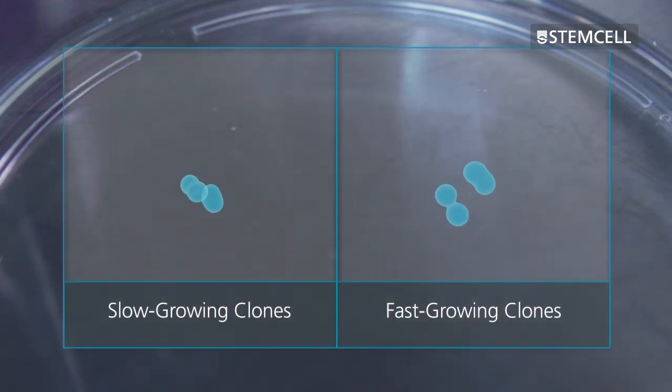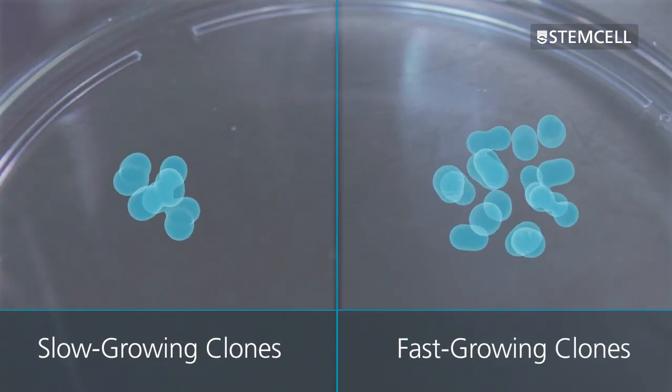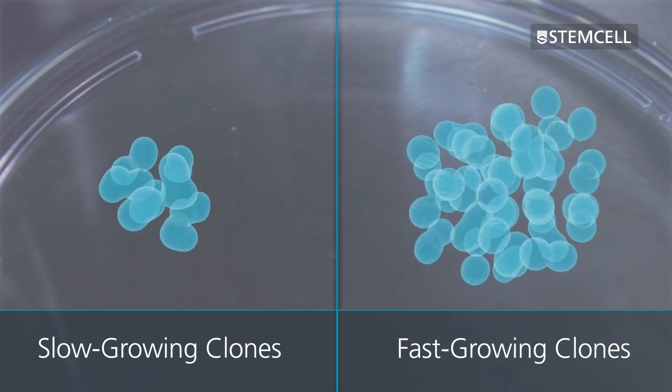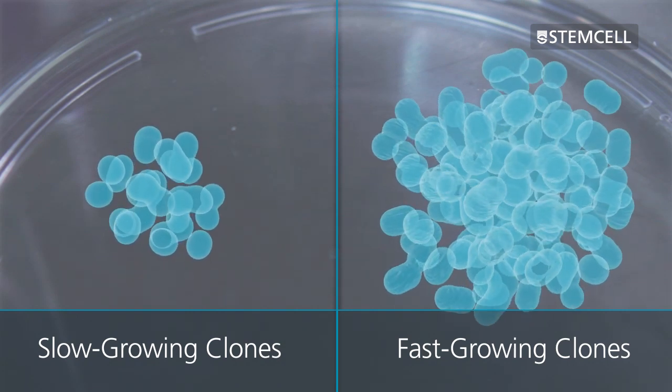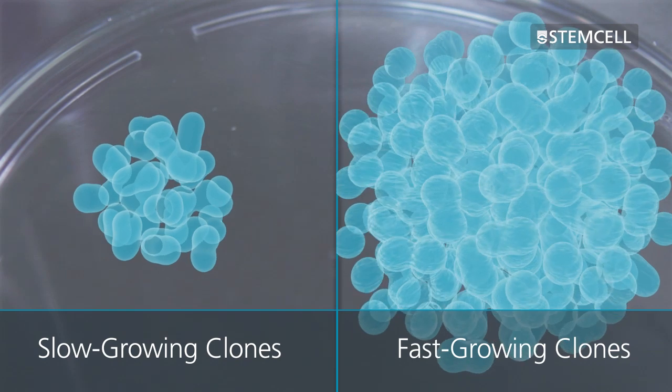With semi-solid cloning, both slow and fast-growing cells grow into discrete colonies, making it easier to isolate rare, high-producing clones.